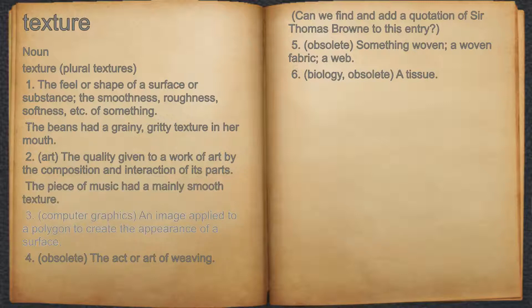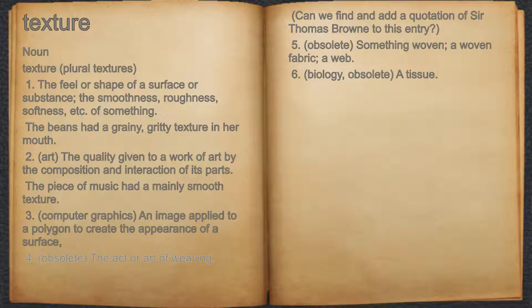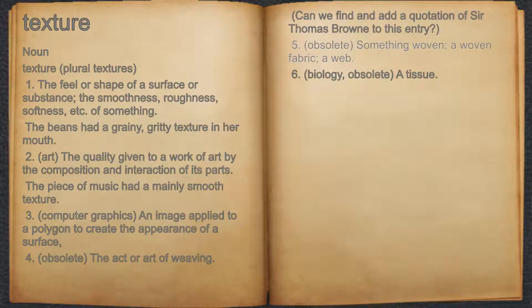Three: computer graphics — an image applied to a polygon to create the appearance of a surface. Four: obsolete — the act or art of weaving. For example: can we find and add a quotation of Sir Thomas Brown to this entry? Five: obsolete — something woven, a woven fabric, a web. Six: biology, obsolete — a tissue.